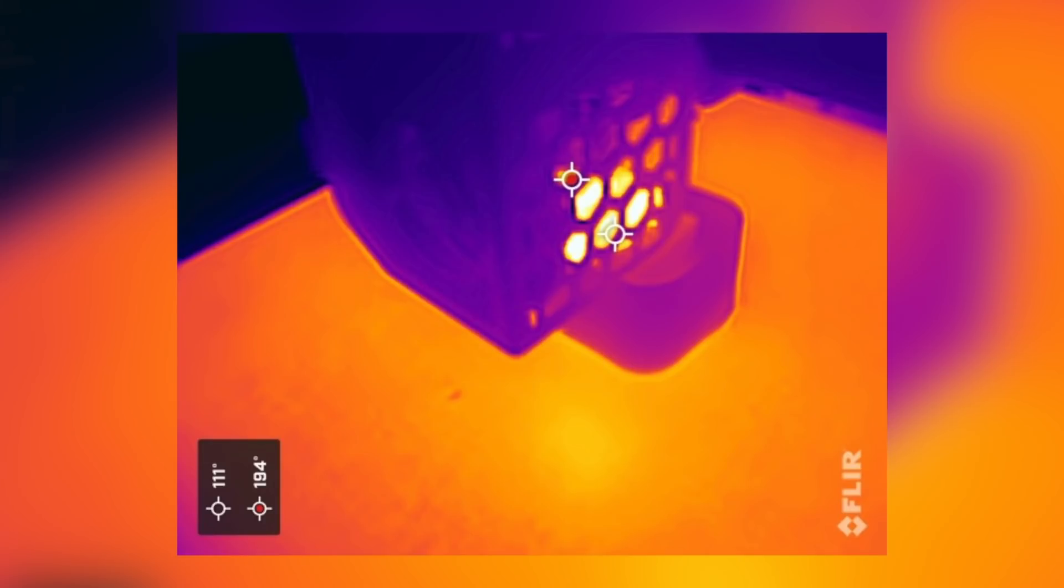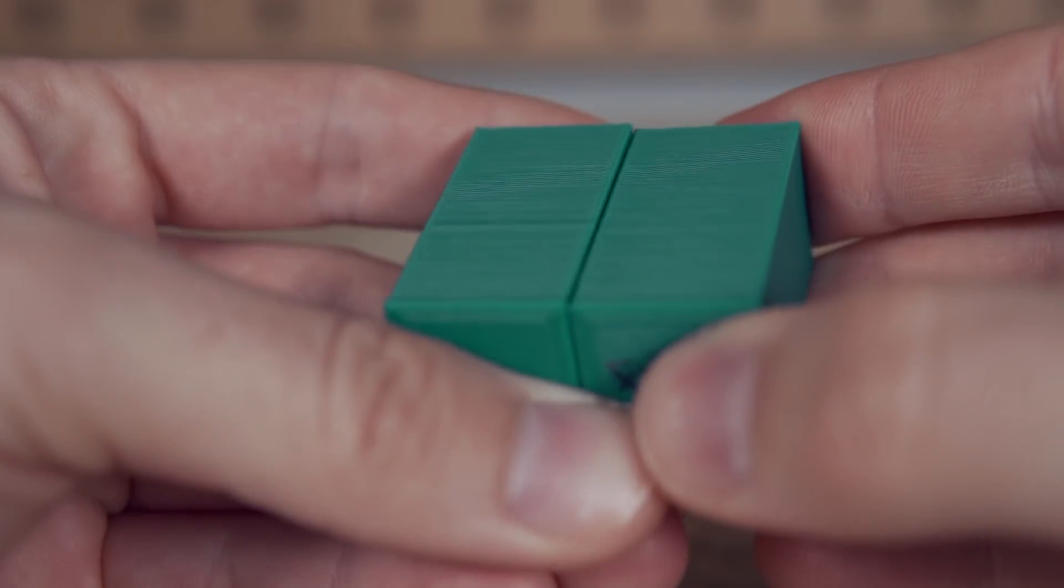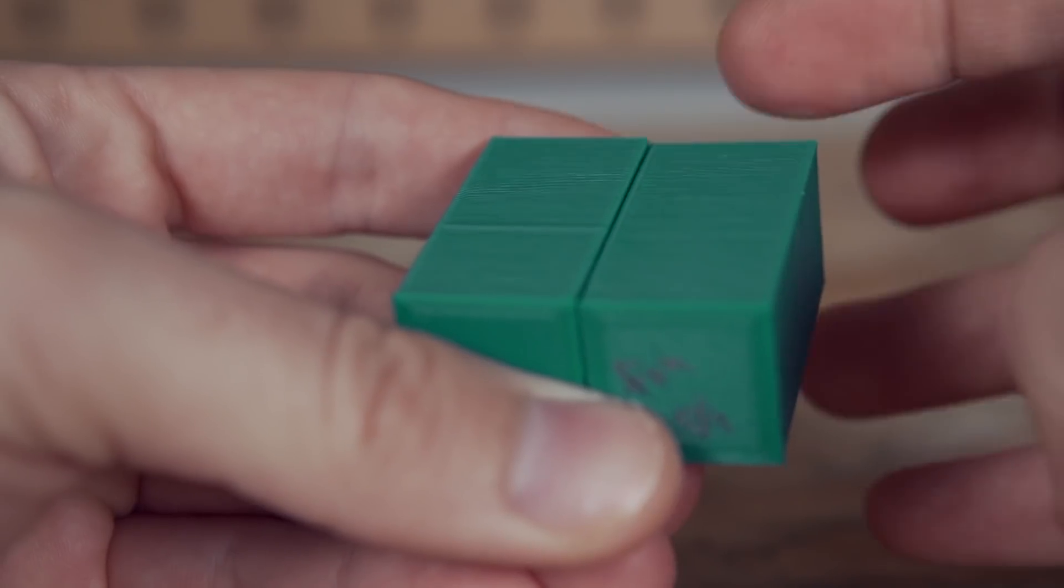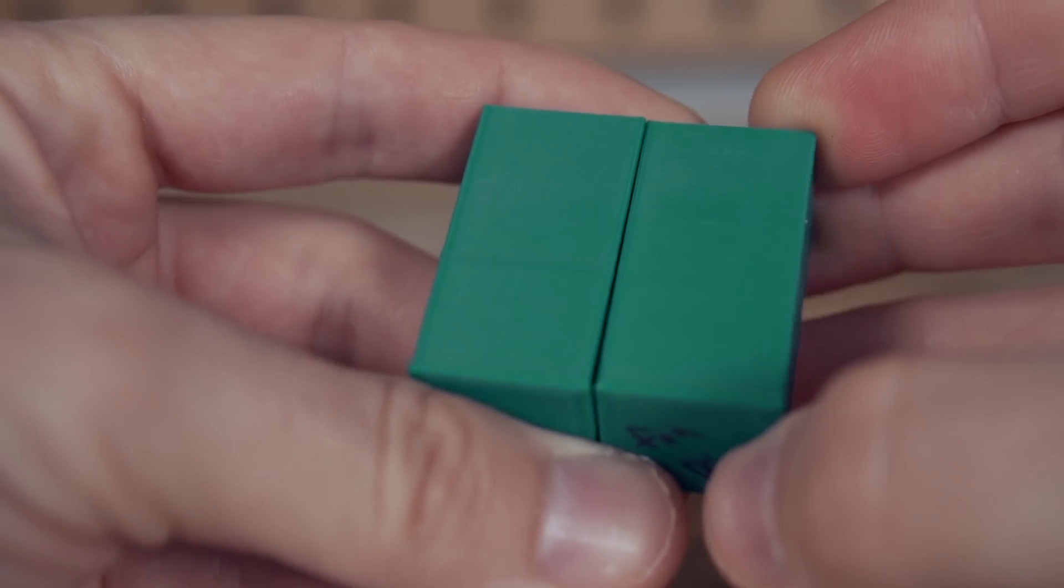I then went ahead and printed the exact same cube with all the same settings, but a draft shield. And it was pretty hard to get a shot with the IR camera just because of the shield all around it. But again, taking them side by side, I can definitely see that the cube stayed much warmer. And when I put them side by side, I can see a slight, slight bulge, maybe around the 15 millimeter mark, but it is very, very minimal compared to the part that did not have the draft shield at all.